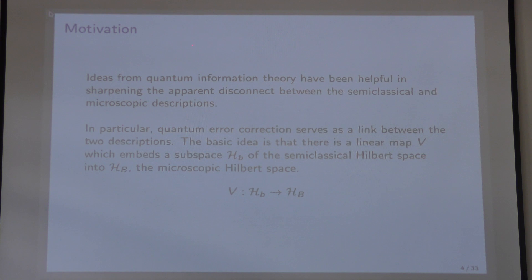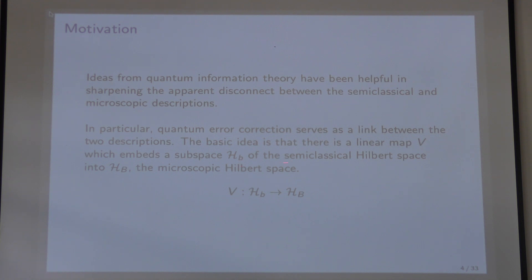Ideas from quantum information theory have been helpful in sharpening the apparent distance between these two descriptions, the semi-classical description and the microscopic one. In particular, quantum error correction serves as a link between the two descriptions. The basic idea is that there's a linear map that I'll call V, which embeds a subspace H_b of the semi-classical bulk space into H_B, the microscopic bulk space. This V is sometimes referred to as the holographic dictionary.